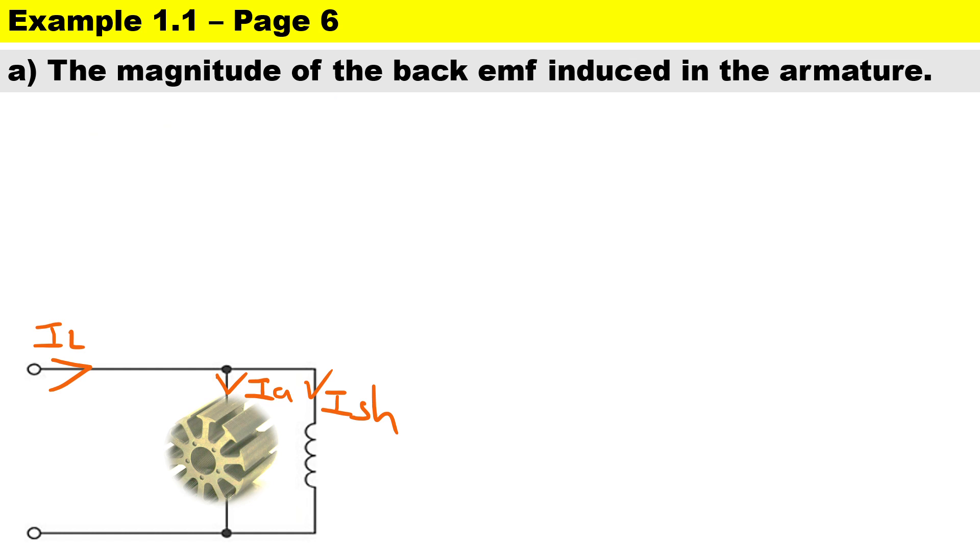Now we can actually go ahead and calculate the back EMF. This is a shunt circuit, so there's only two volt drops. It's going to be V minus IA times RA. There's no brush contact voltage across the brushes.